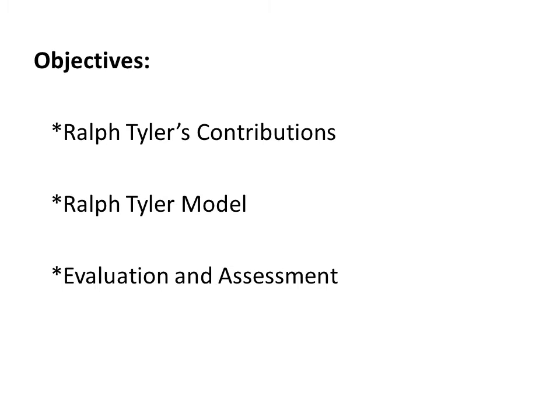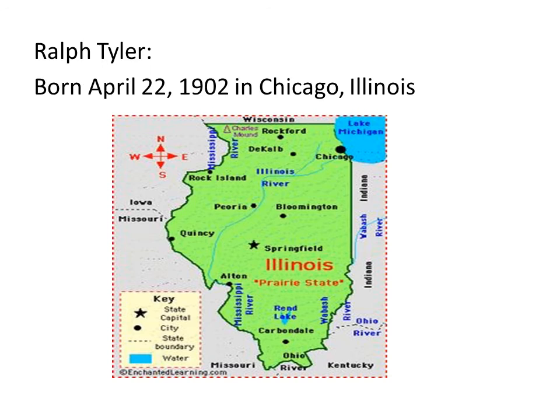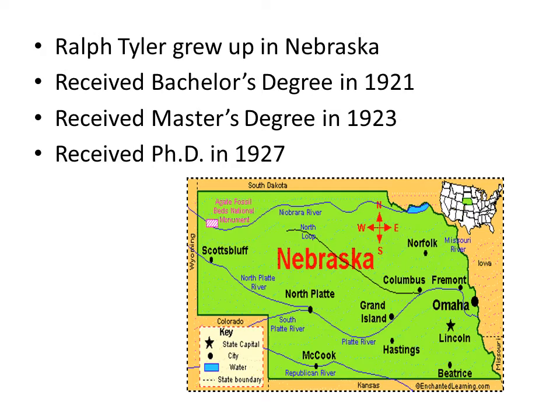The objectives I will cover today are Ralph Tyler's contributions, his model, and evaluation and assessment. Ralph Tyler was born April 22nd, 1902 in Chicago, Illinois. He was the sixth child born of eight children. Ralph Tyler grew up in Nebraska in a professional family. His maternal grandfather served in the Civil War and had been appointed as a judge in Washington by President Ulysses S. Grant.